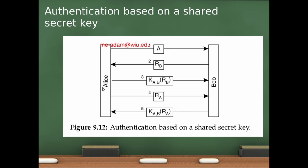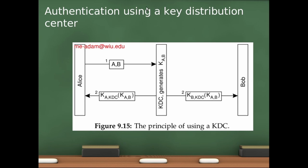This shared secret key mechanism suffers from a scalability problem in distributed systems — you have to maintain a secret key connection with every single node in the system, which grows very large with too many nodes. A better approach is using a key distribution center, where every node only needs a secret key shared with the distribution center.